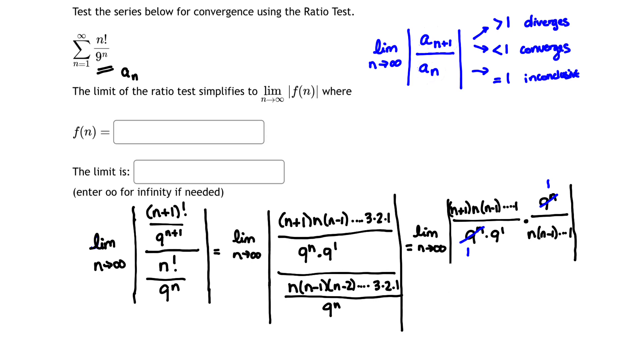I have n times n minus 1 all the way down to 1, and that appears both in the numerator and the denominator. And so it looks like what I'm left with is that this is equivalent to taking the limit as n goes to infinity of just the absolute value of n plus 1 over 9.